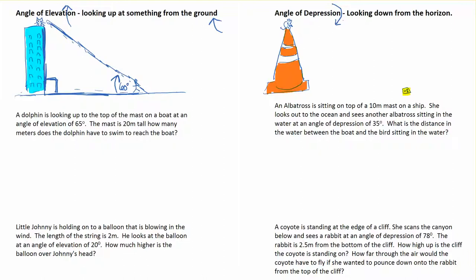If I think about this little mouse on top of a road cone, and he looks off into the distance and he can see a little piece of cheese. As he's gazing, he's going to gaze out along the horizon. The horizon is just a flat line, looking out into the distance. Our angle of depression is made by measuring down from the horizon.